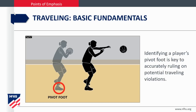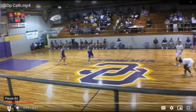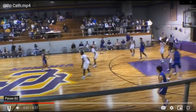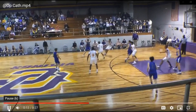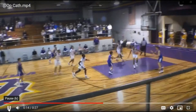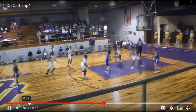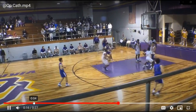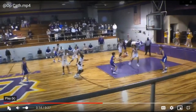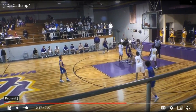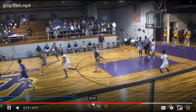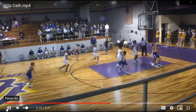Identifying a player's pivot foot is key to ruling on potential traveling violations. In this two-person mechanics play, we're going to watch the player who receives the ball from the high post down low. Legal or not legal? This player will change pivot feet, and this should be ruled illegal — a traveling violation.